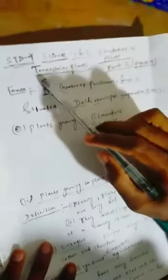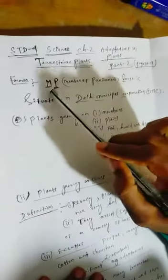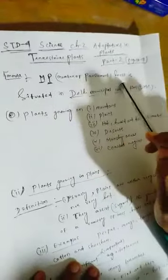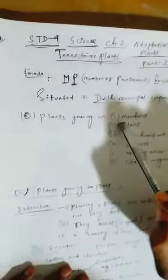First: terrestrial plants. Standard four science, chapter 2, adaptation in plants. Terrestrial plants can be categorized into six plant regions, represented by the mnemonic: MP house is situated in Delhi Municipal Corporation. MP stands for Member of Parliament. We have already discussed about mountains (M) in previous classes.